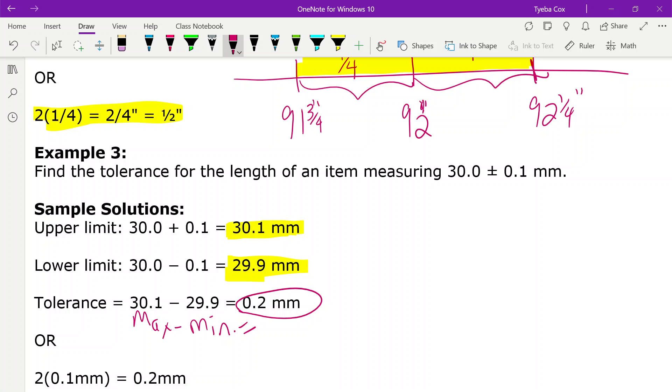We could also just simply double this, just go 0.1 times 2. And that gives us the same answer right here for our tolerance.